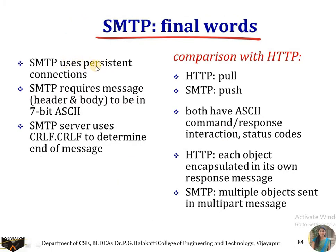SMTP uses a persistent connection — the connection remains open even after sending one email, so additional emails can be sent over the same TCP connection. SMTP requires messages to be in 7-bit ASCII format for both the header and body. The SMTP server uses carriage return and line feed (CRLF) to determine the end of the message.